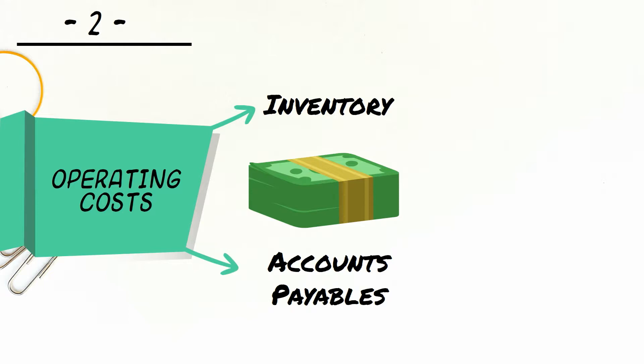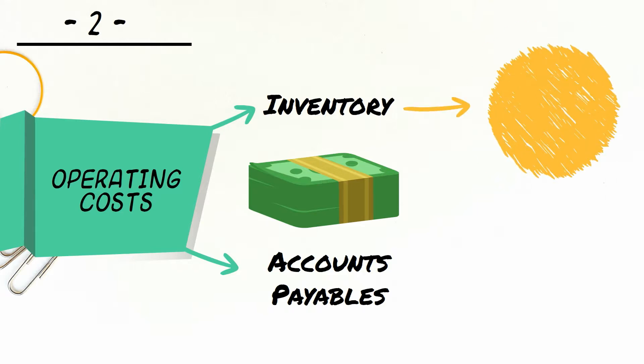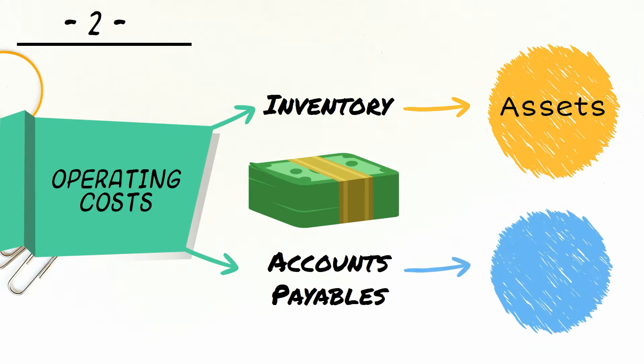Some supplies are purchased on credit, so the company generates accounts payables as part of the operating cycle. Inventory is an asset, and accounts payable a liability.